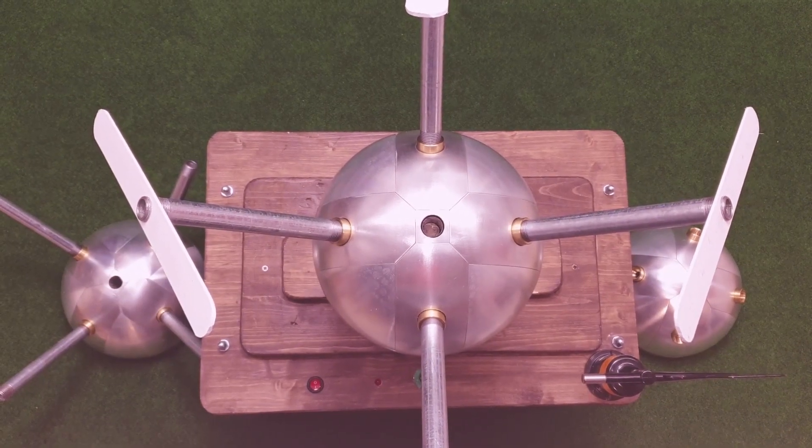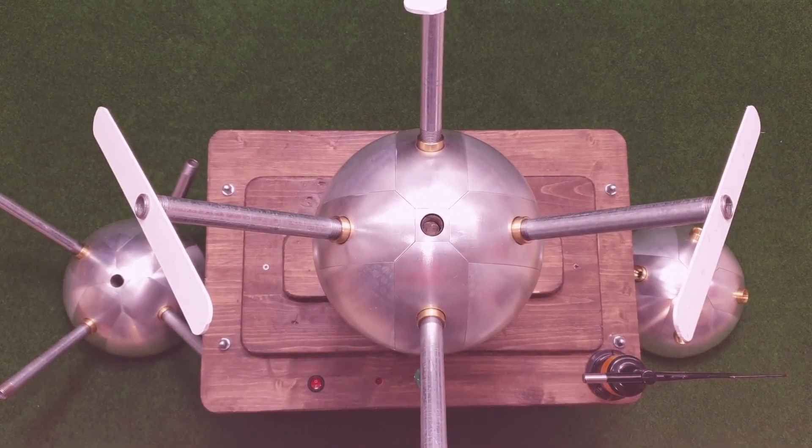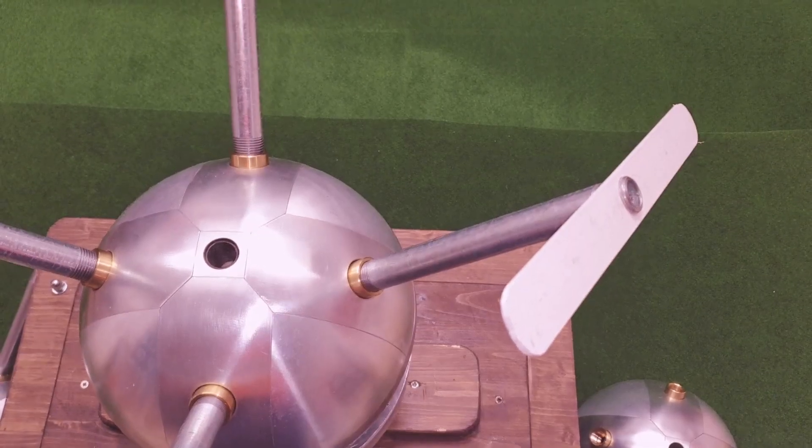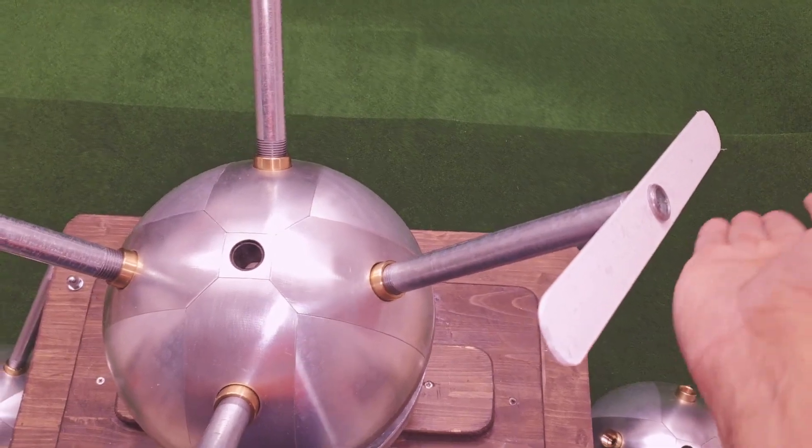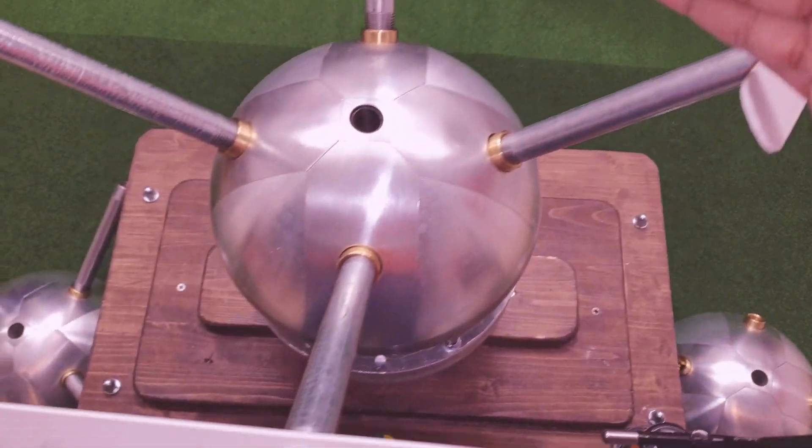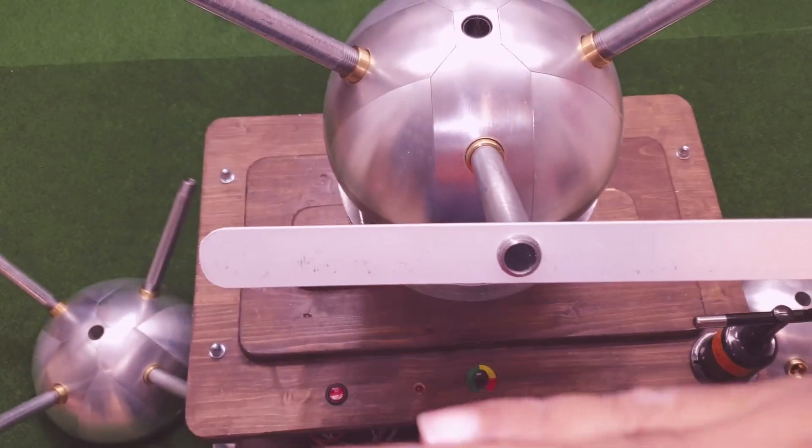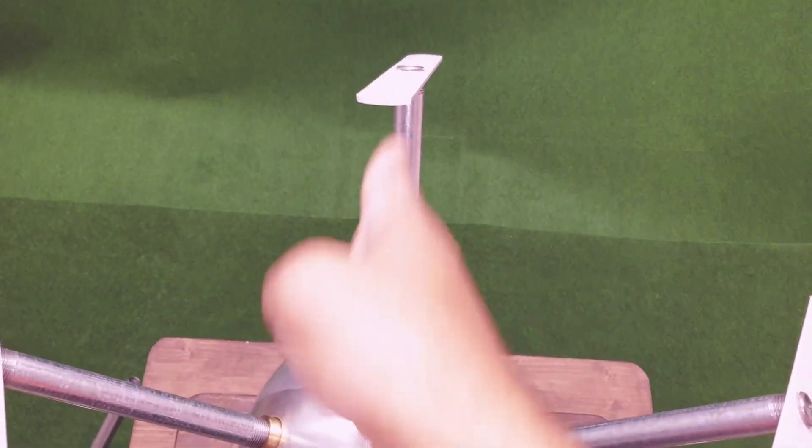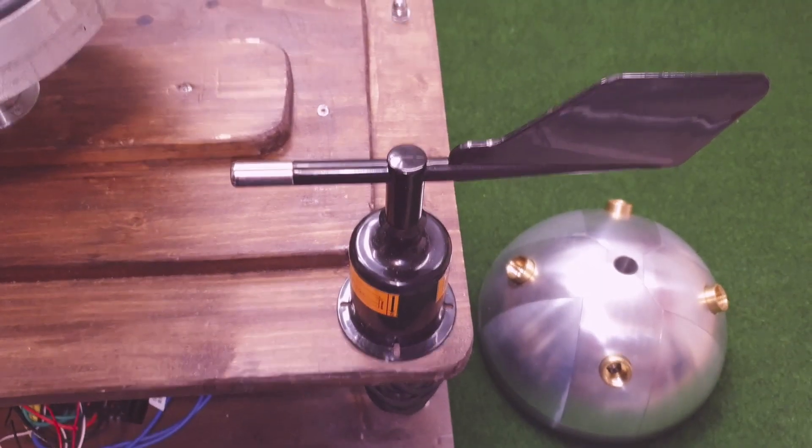This is the top view of the propeller. The blades are still in fabrication. Each blade will come like this, the second blade will come like this. This is the wind direction sensor.